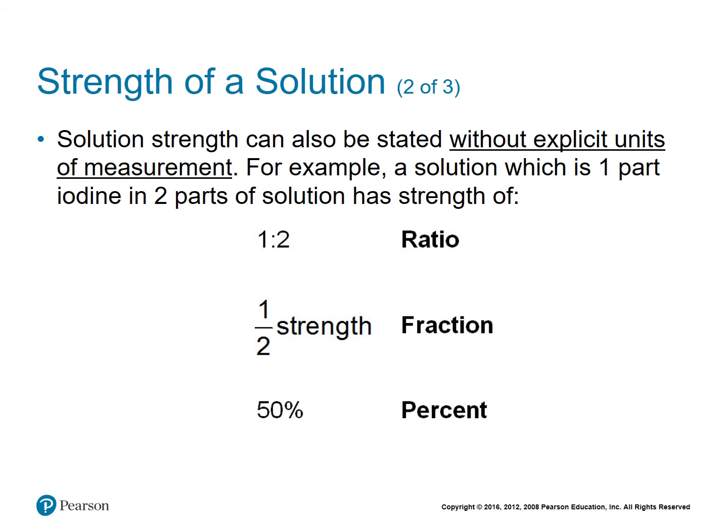Strengths are given as ratios, fractions, or percents, and sometimes are given without explicit units of measurement. On the previous slide the units of measurement were there — we saw milligrams per milliliters, and also grams per liter. But sometimes the units are left off, and I'll explain in the next slide what you assume when this is the case.